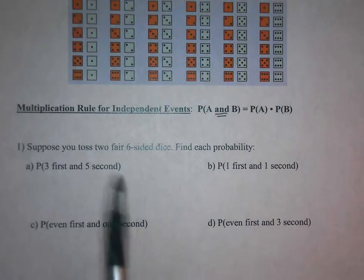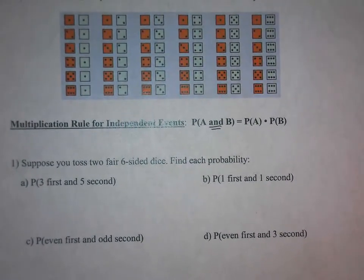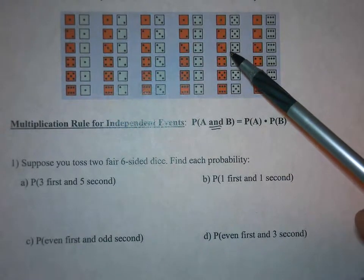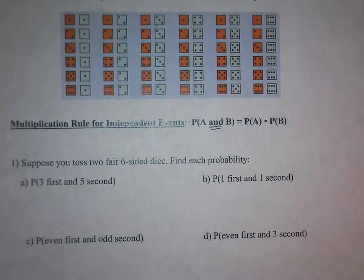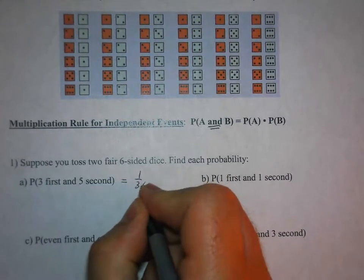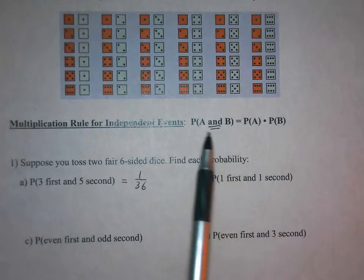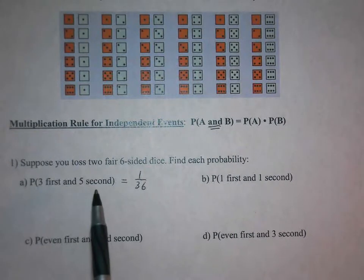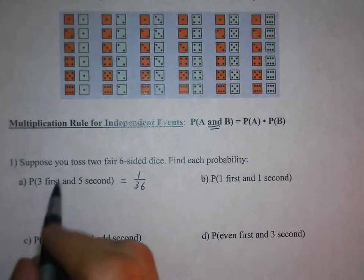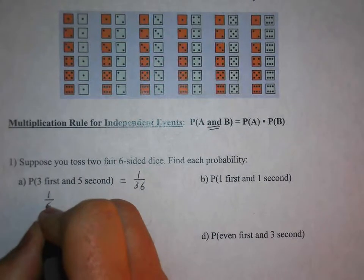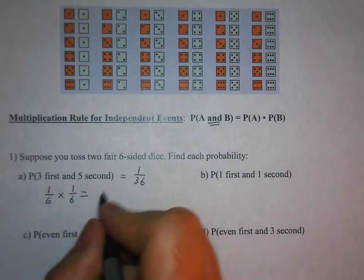Suppose you toss two fair six-sided dice. The probability of rolling a three first and a five second — we can see in our sample space that a three first and a five second is only one outcome out of the 36 total. Applying the multiplication rule for independent events: rolling a three on the first die is one out of six, and a five on the second die is also one out of six. Multiply one-sixth times one-sixth and you get one out of 36.